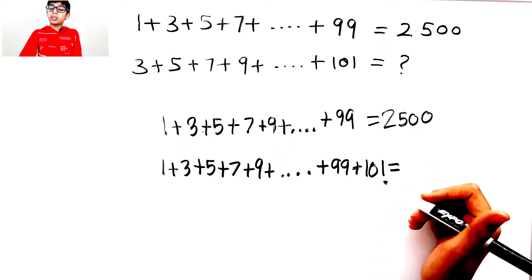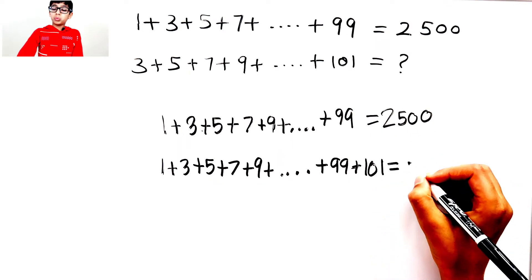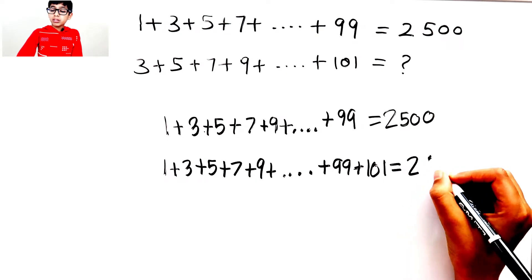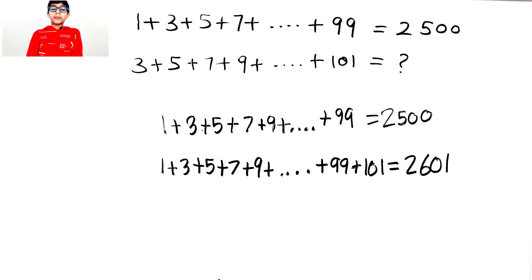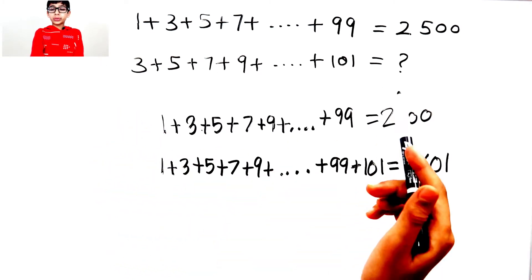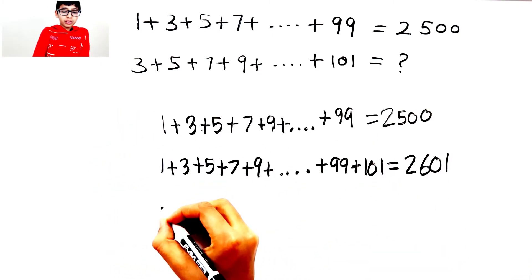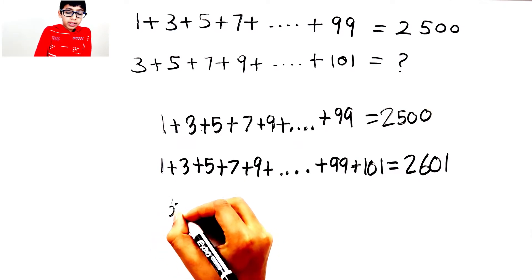So 2500 plus 101 is 2601. Let's write this sequence: 3 plus 5 plus 7 plus 9 plus... all the way. 2601 minus 1 equals...